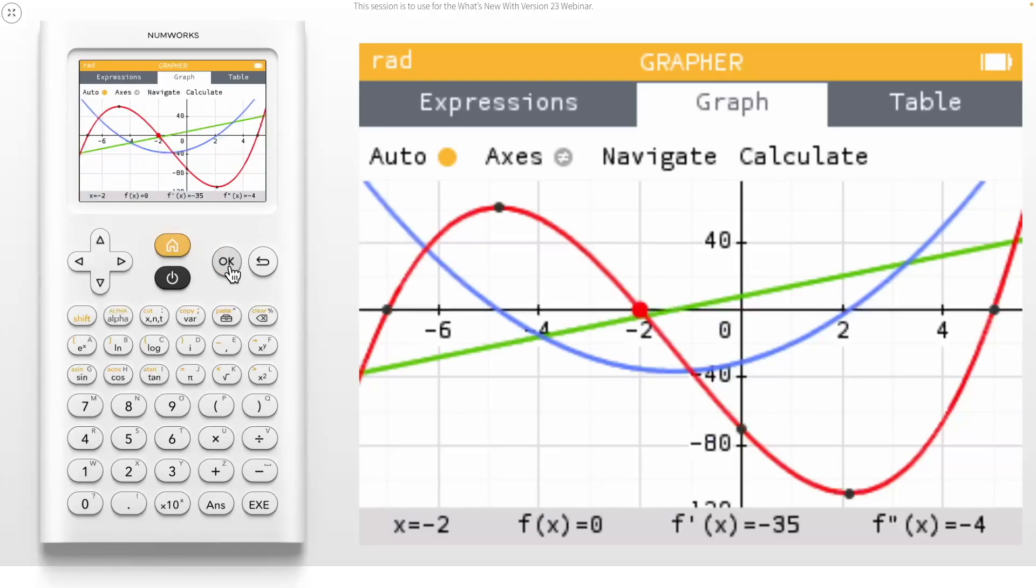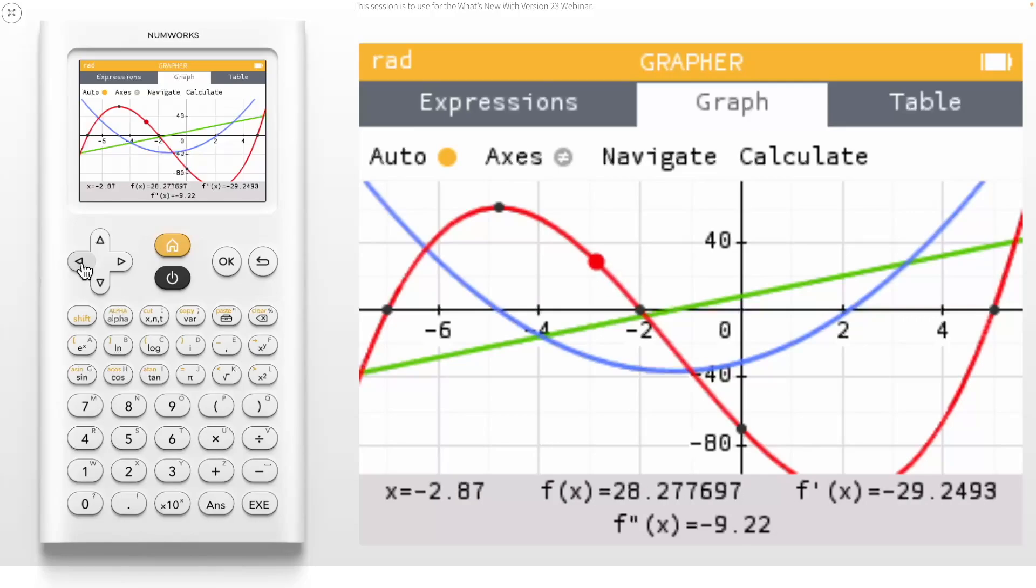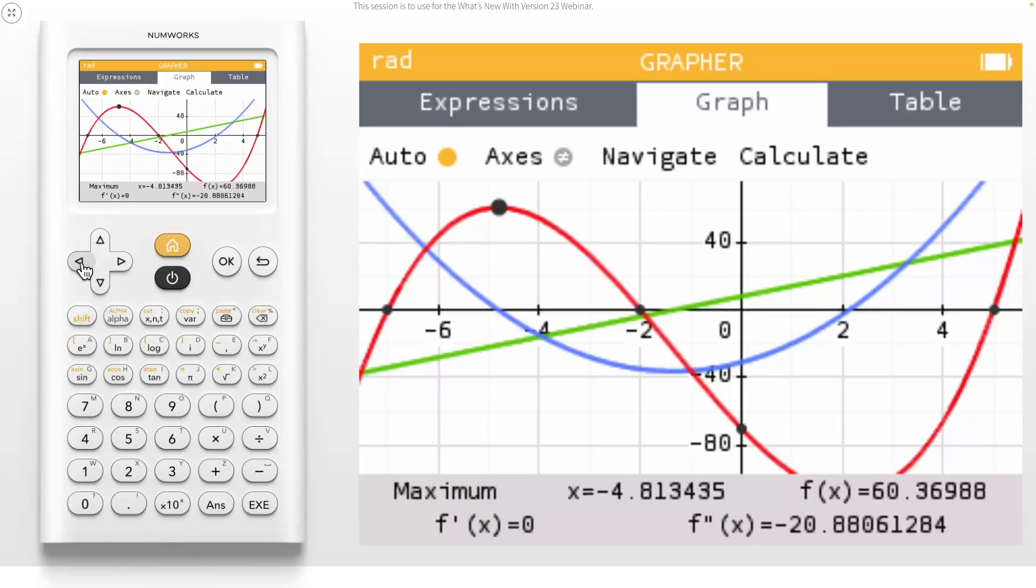Here we can see all three graphs at one time. Notice that the values of the derivatives are present on the bottom banner, along with the values for x and f of x. If I navigate left to go to the maximum value for f of x, I can easily see that the value of f' is 0. You can also use your up or down arrows to move your tracer to the derivatives.